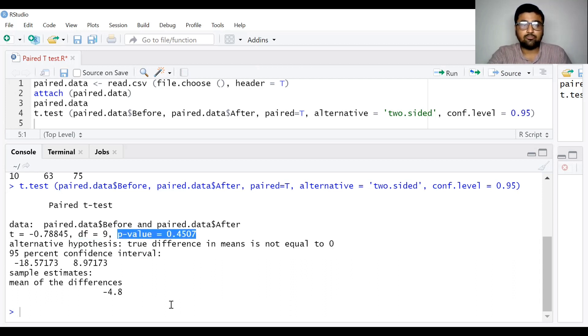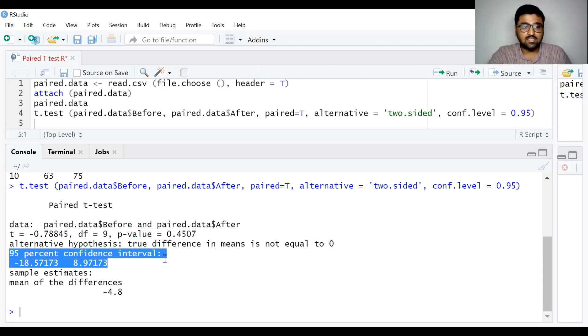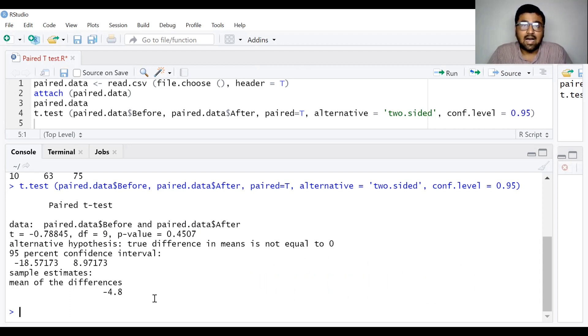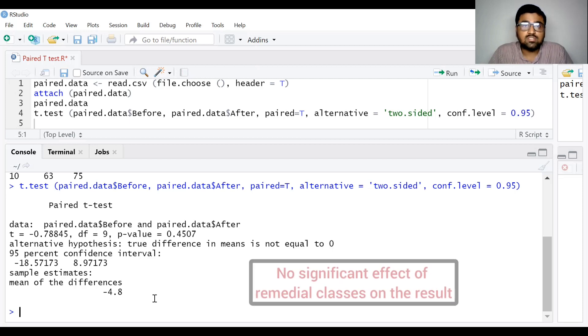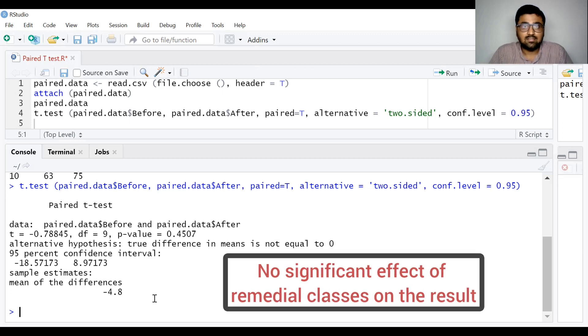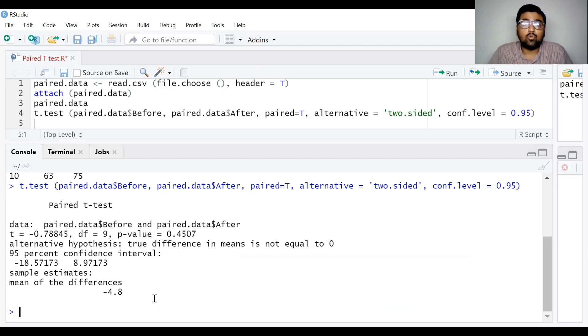The p-value is 0.4507 and 95% confidence interval is given. This p-value 0.4507 is greater than 0.05 that is alpha. Since this value is greater than 0.05, we fail to reject the null hypothesis. Therefore we can conclude that there is no significant difference in the result of the students after remedial classes or remedial classes have no significant effect on the result of the students.